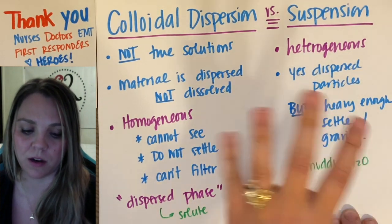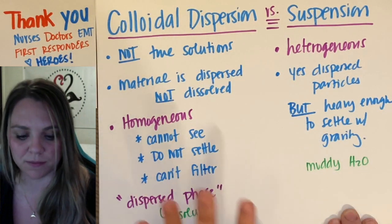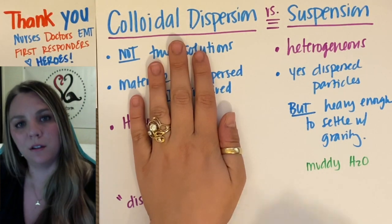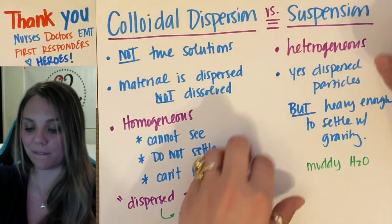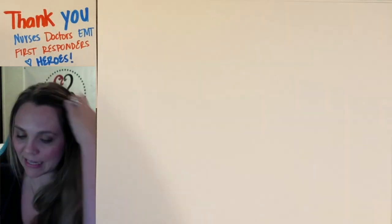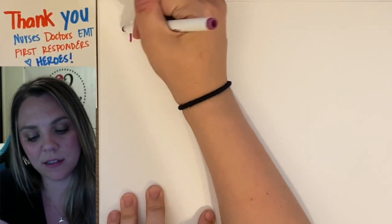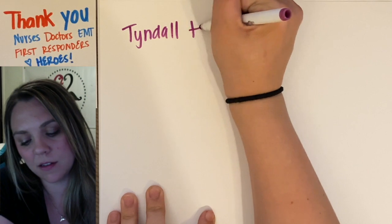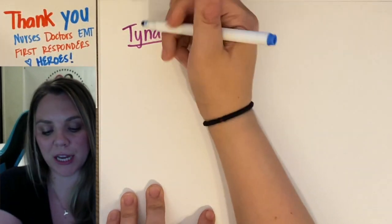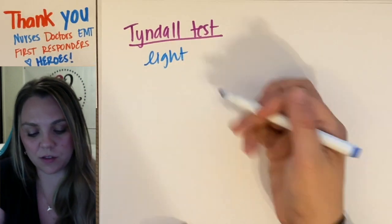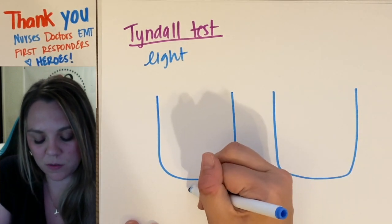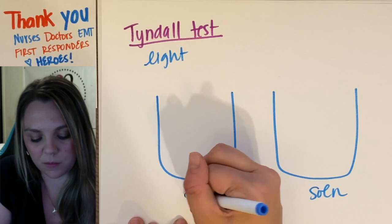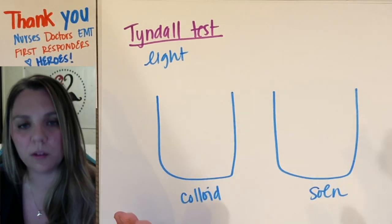That's the main way to tell a suspension from a colloid or from a solution. Now, how do you tell a colloid from a solution? That is the light test, which we call the Tyndall test. It's basically where you shine a light on the solution. So if this was a true solution over here, and this was your colloidal dispersion over here...